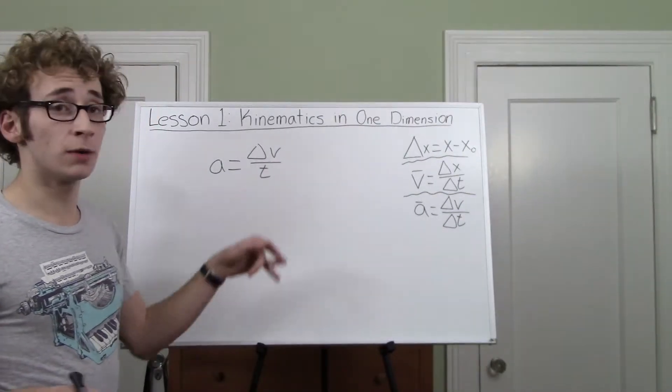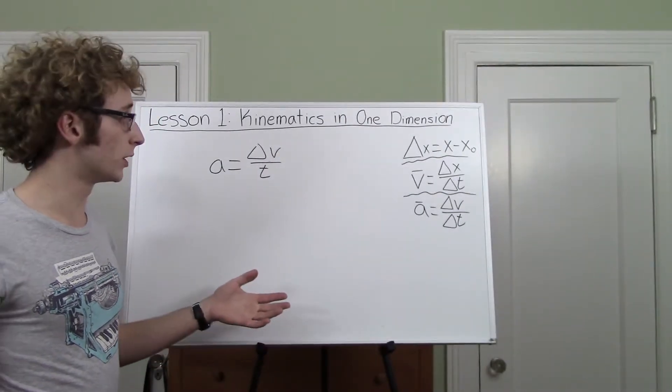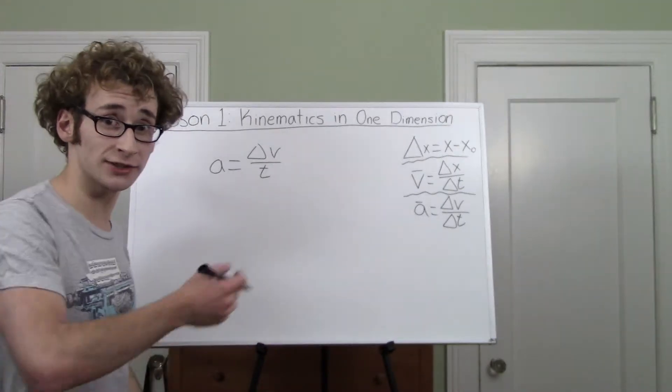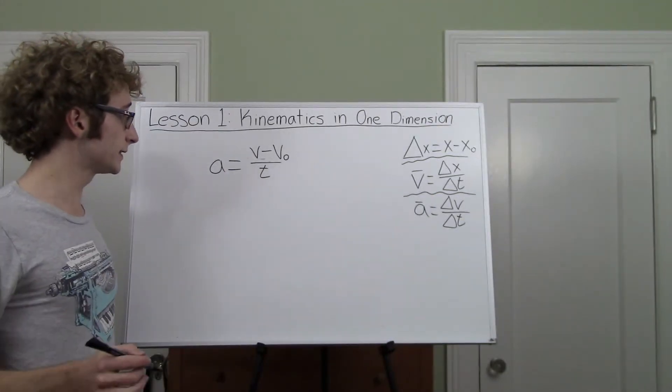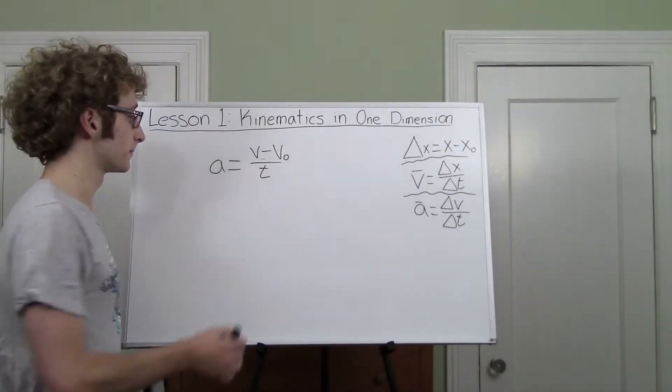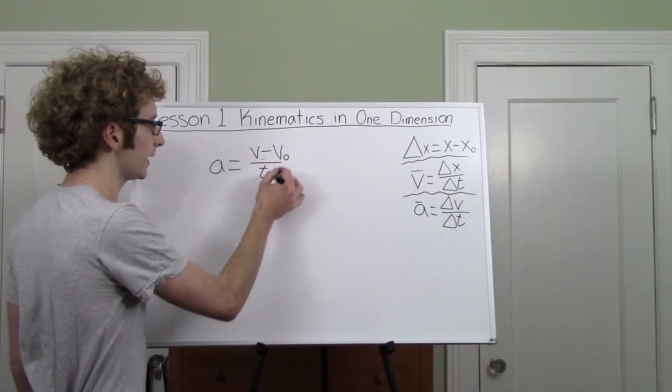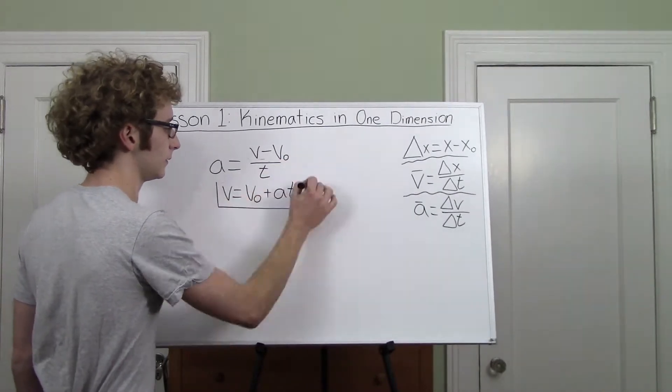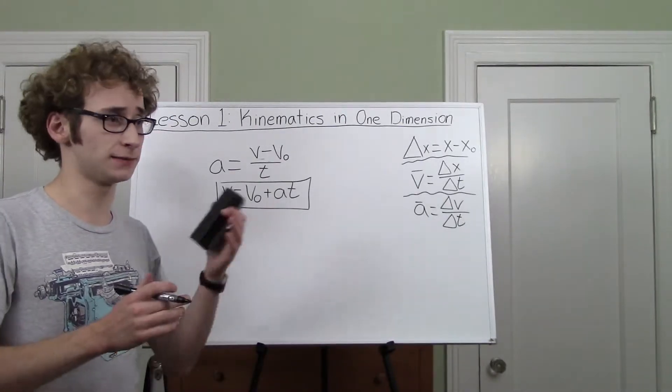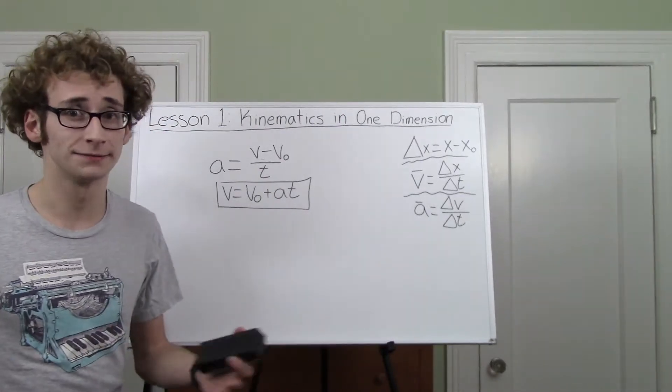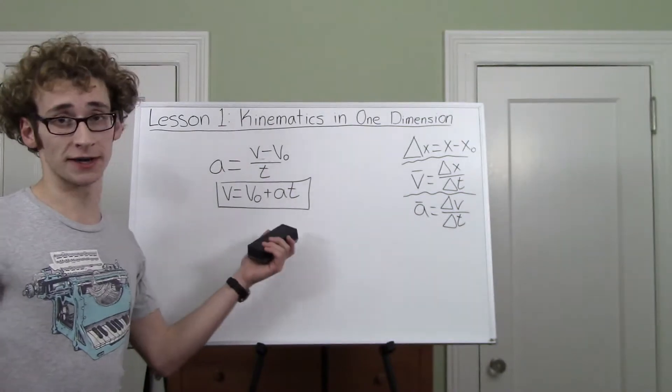Anyhow, what do we know about delta v? Well, we know that delta anything is final minus initial, so let's write that. Looking good so far. Now let's just solve for v. Bring t over here and then add v0. Boom. Equation number one, done. It was easy. All we did was split up delta v into final minus initial and then solve for v. That was it. This equation is a very handy one.